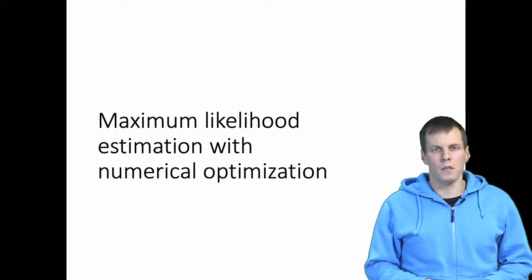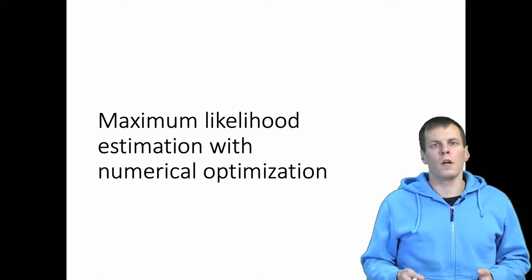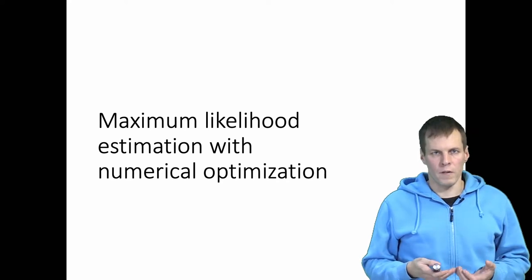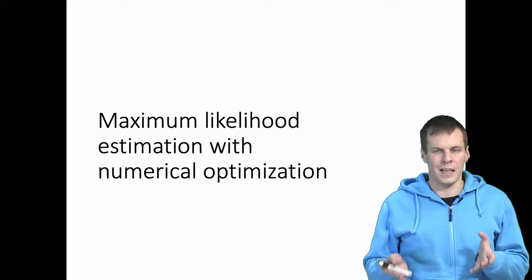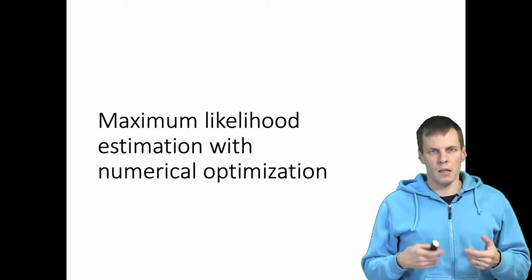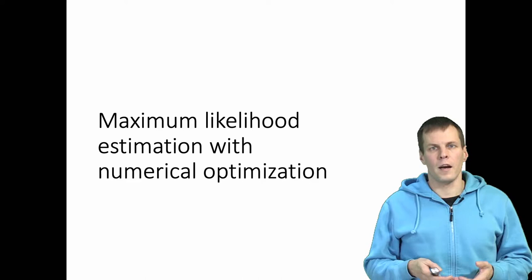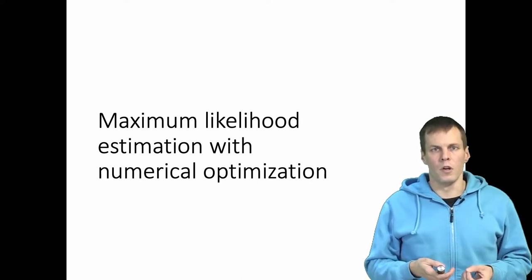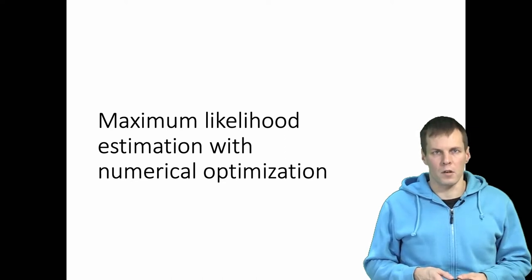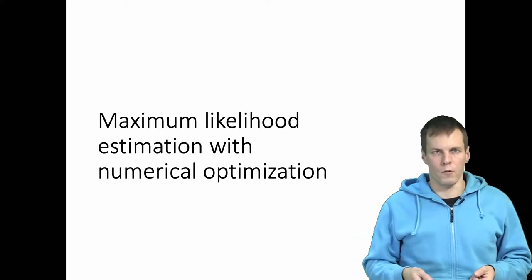This video explains the basics of numerical optimization within the context of maximum likelihood estimation. Very few statistical models can be solved by simply taking the data and applying algebra to get the estimates. Instead, we find the estimates iteratively with a computer by trying different values for the parameters, calculating a likelihood, and then finding a set of parameter values that makes the likelihood as large as possible. That's the basic idea of numerical optimization.